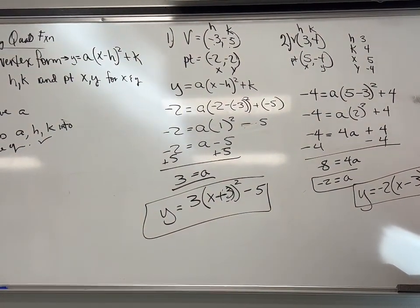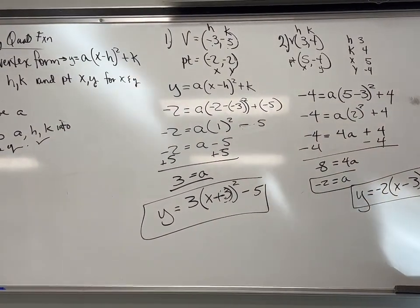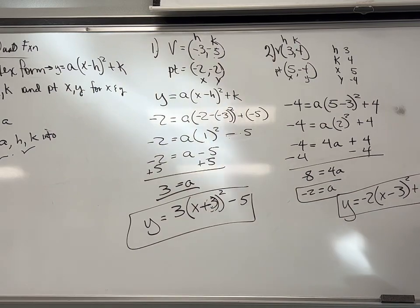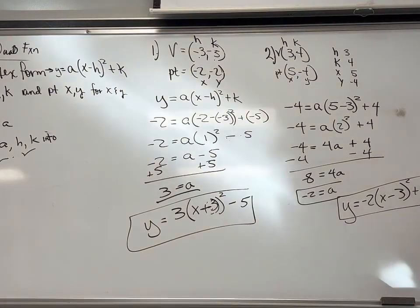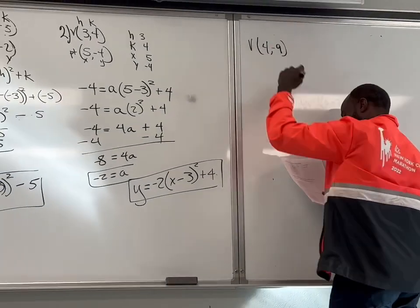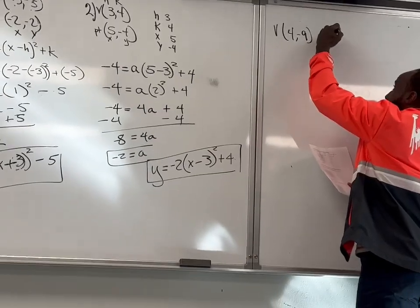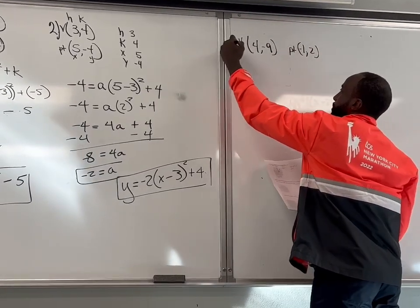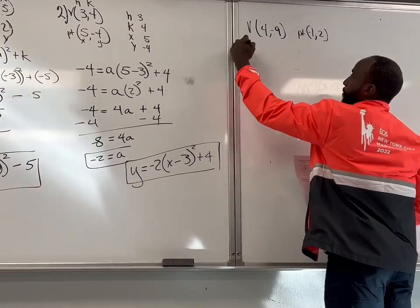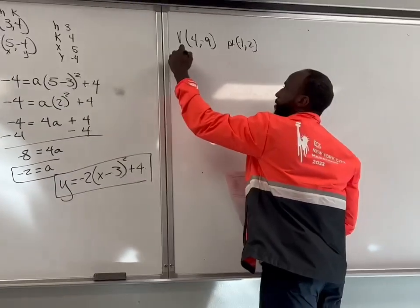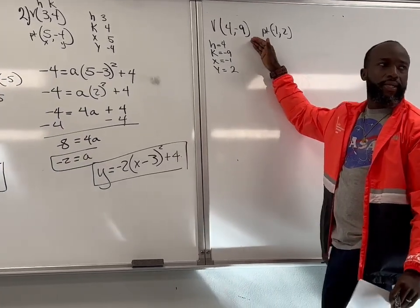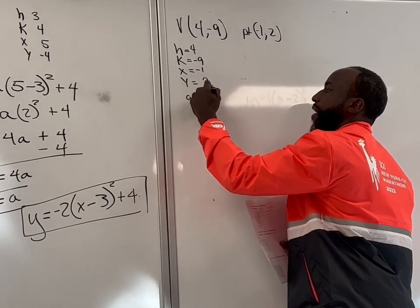I'm going to let y'all do number 3, but let's jump to number 4 right fast. I'm going to give you the vertex. We're going to write the equation for this quadratic. Most important thing is write the equation. So, given that the vertex is 4, negative 9, and it passes through negative 1, 2 — let's list h, k, x, y. H is 4, k is negative 9, x is negative 1, and y is 2. We identify what all our variables are, and we got to find a.